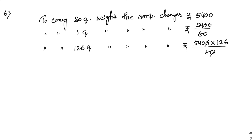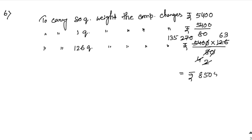Simplifying: the two zeros cancel, leaving 540 into 126 by 8. Dividing by 2 repeatedly: 540 by 2 is 270, 8 by 2 is 4, then 270 by 2 is 135, 4 by 2 is 2. So we have 135 into 63 divided by 1 — 135 into 63 gives rupees 8505 as your final answer.